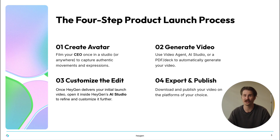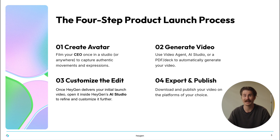Film your CEO once in a studio, or use footage you already have. We recommend using a 4K camera, even if it's on your iPhone. Then generate the video using Video Agent, AI Studio, or upload a deck to create your launch video. Next, customize and edit — refine it with B-roll, music, captions, and branded visuals. Finally, publish and share: download the video or share it instantly across all platforms.